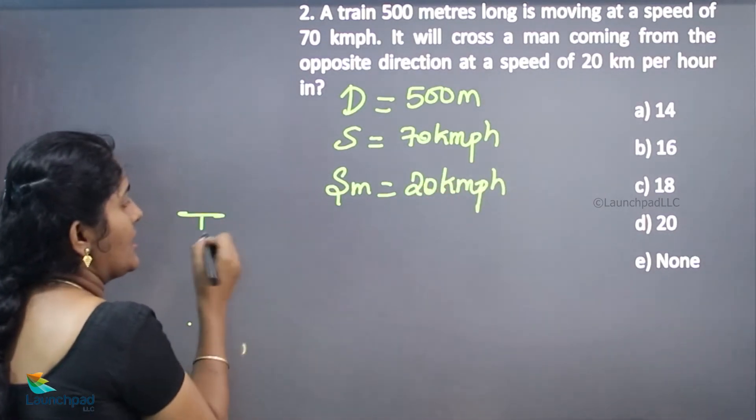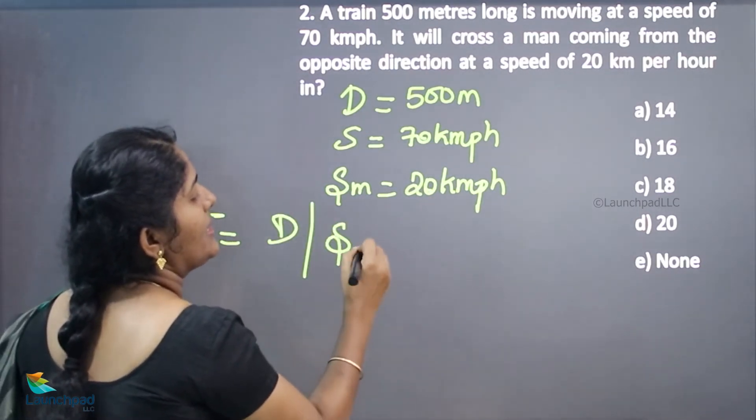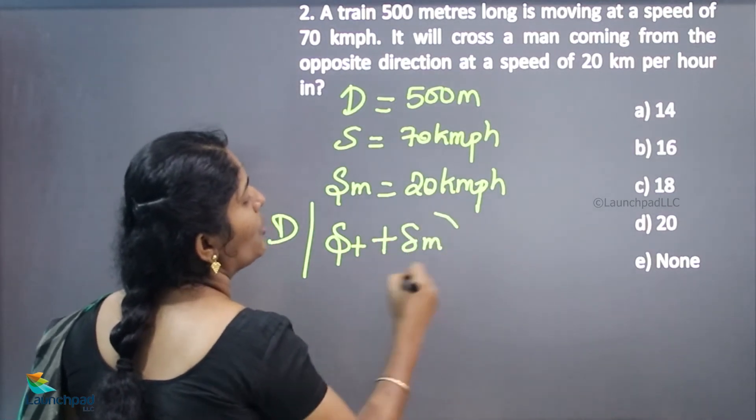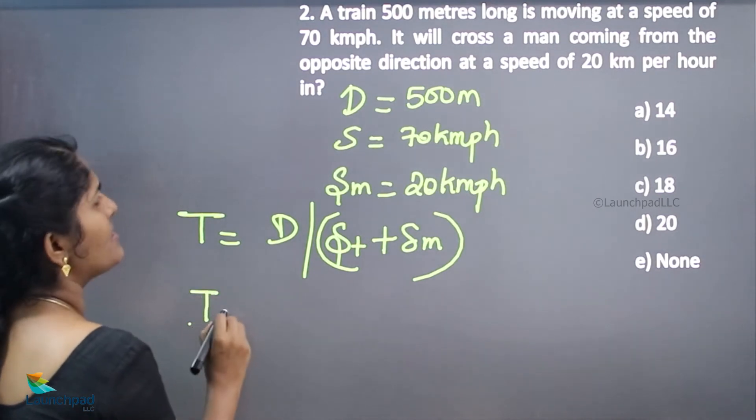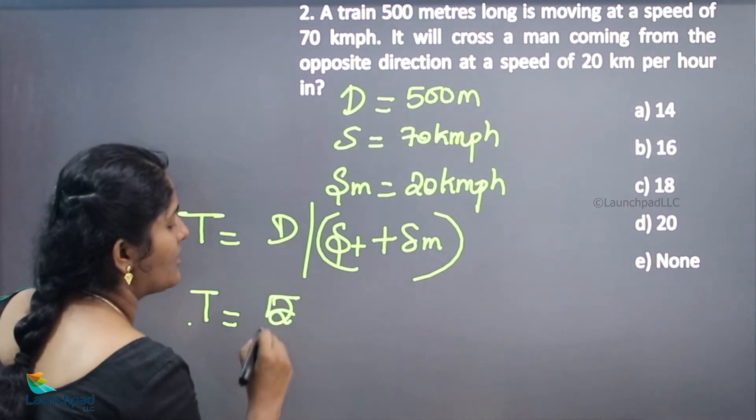Time equals distance of train divided by speed of train plus speed of man, because both are in opposite directions. Time equals the distance, which is 500, divided by the speed.